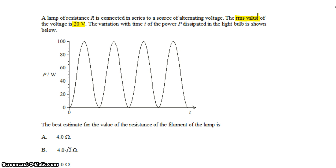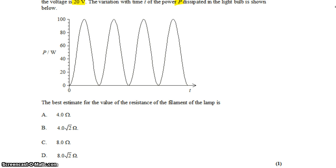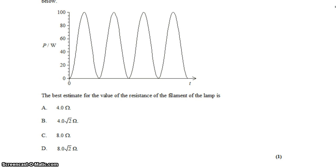The variation with time t of the power dissipated in the light bulb is shown below. We want to use this information to estimate the resistance of the filament.